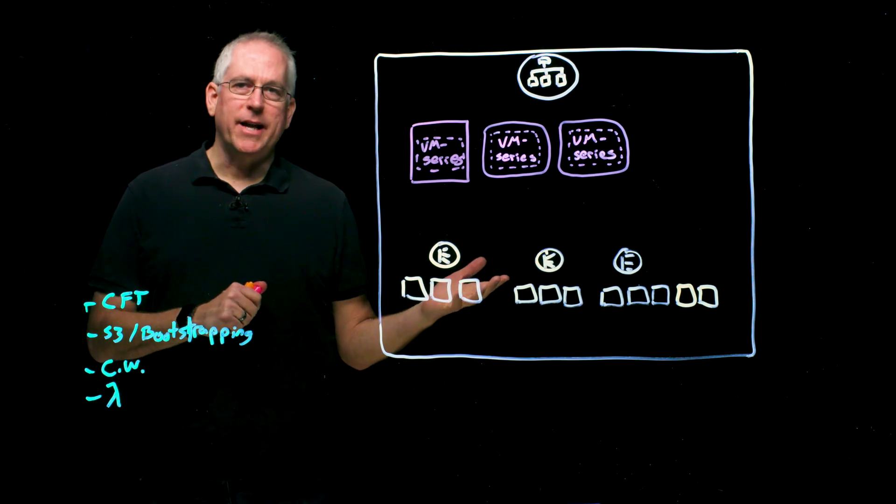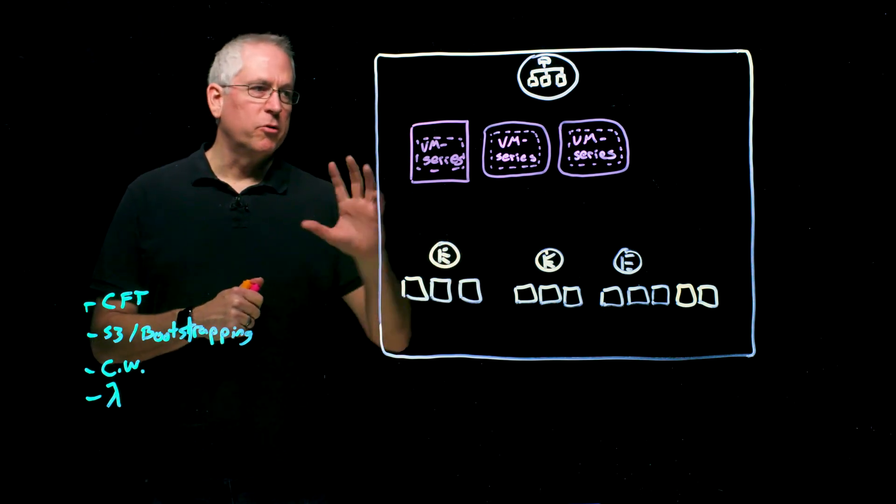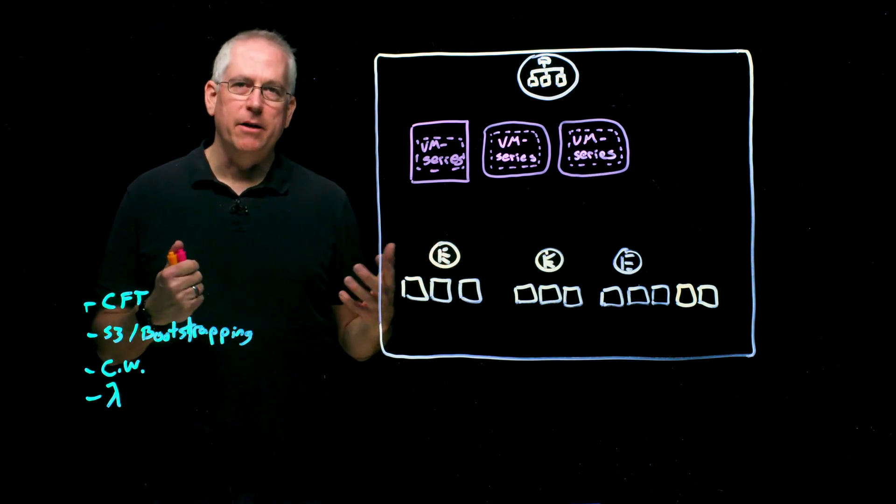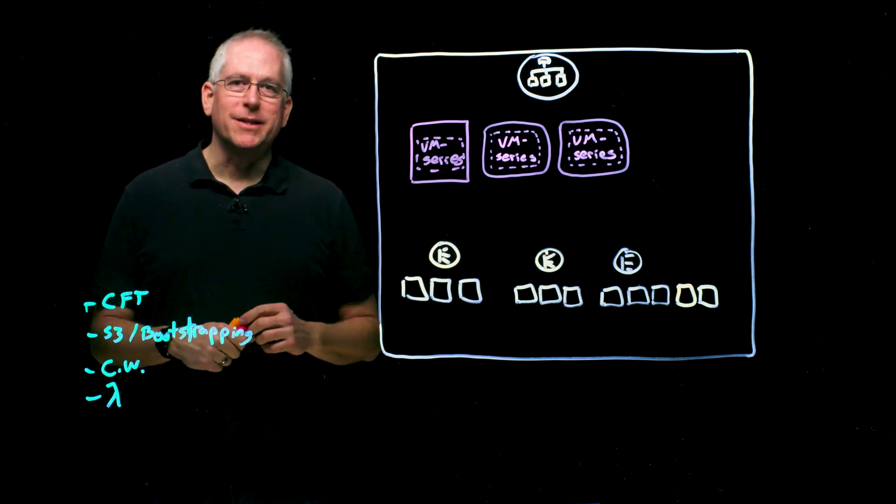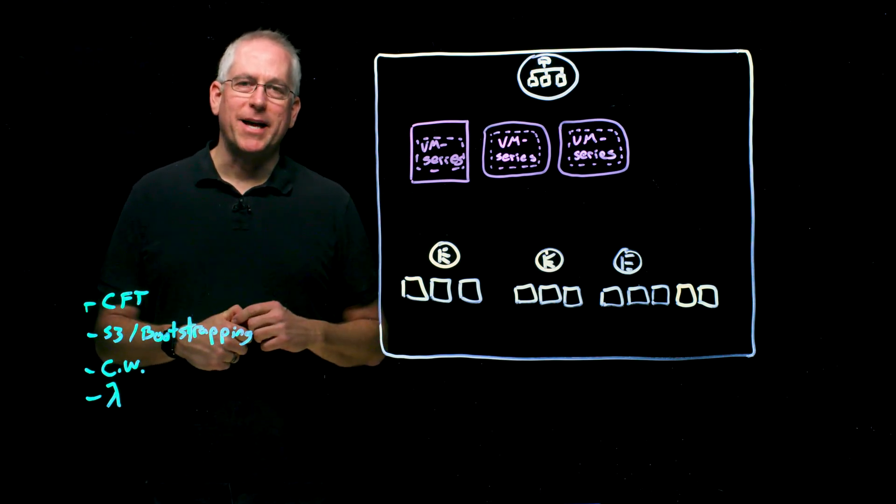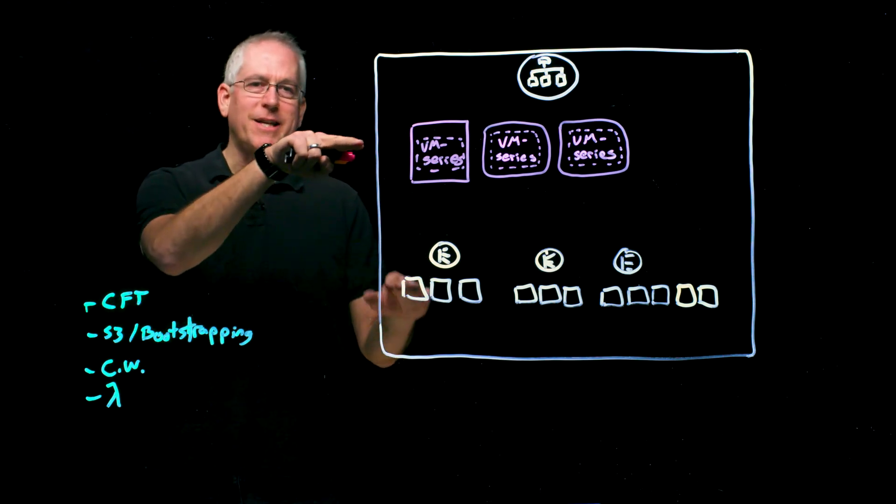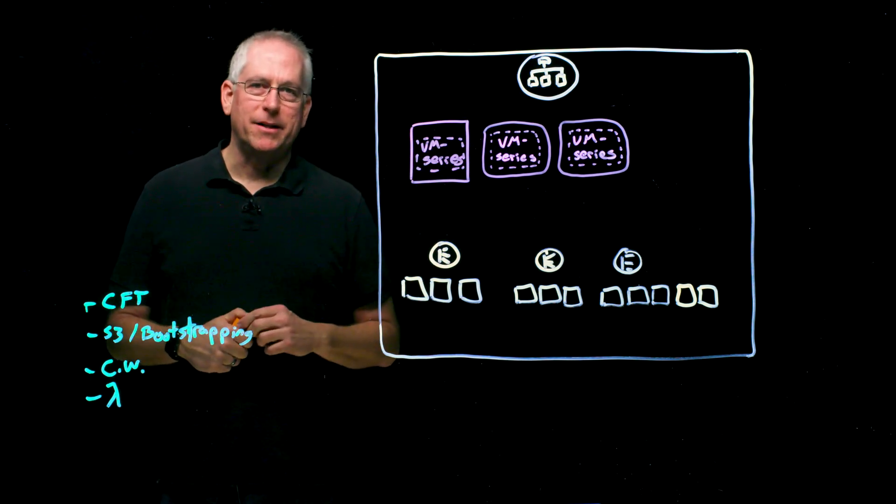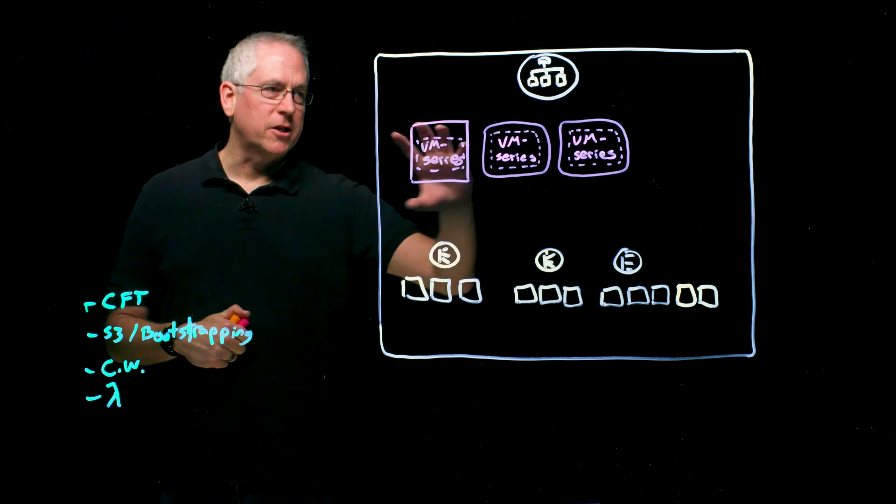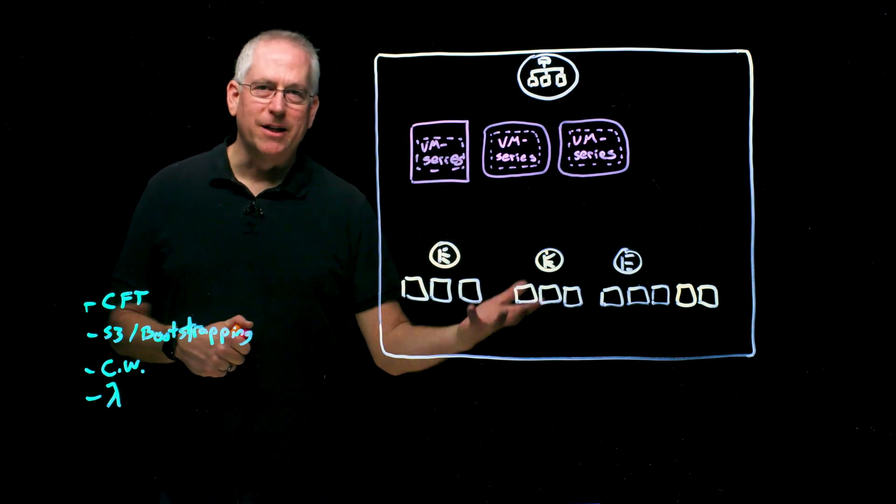When the application dies down and things go back to normal, we'll remove one of the firewalls as needed. And this can scale quite large, if needed, based on metrics that you can decide how conservative or how aggressive you want to be, how responsive you want to be to that demand. The important thing here is that these two tiers are scaling independently. So each application scales on its own metrics and that security tier scales on its own metrics.